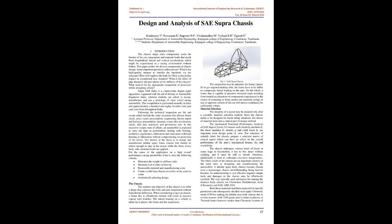This paper probes the diverse components of chassis design. Some important questions addressed are: what is the best manner to transfer loads via the structure? How stiff ought the body be? How does a chassis impact exceptional race situations? What is the effect of pipe diameter and cross-section on the stiffness of the chassis? What should be the appropriate component of protection whilst designing a body?